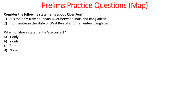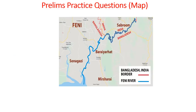Consider the following statements about river Feni: it is the only transboundary river between India and Bangladesh; it originates in the state of West Bengal and then enters Bangladesh. Which statements are correct? The answer is none. It is not the only transboundary river — others include Teesta and Ganga. And it does not originate in West Bengal; it originates in the state of Tripura.